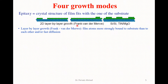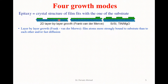In Frank-van der Merwe growth, as you can see here, the film atoms — shown as green ball-like structures on top — are more strongly bound to the substrate surface — shown as blue ball-like structures — than to each other. The film material is entirely bound to the substrate surface. We call this 2D layer-by-layer growth, or Frank-van der Merwe growth.